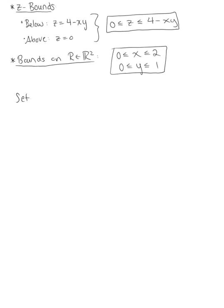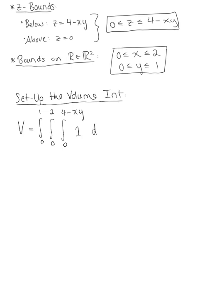We want to set up the triple integral for the volume. The volume is equal to the integral from 0 to 1 for y, from 0 to 2 for x, and from 0 to 4 minus xy for z. The integrand is 1 because we're using a triple integral to find volume, and the order of integration is dz, dx, dy.